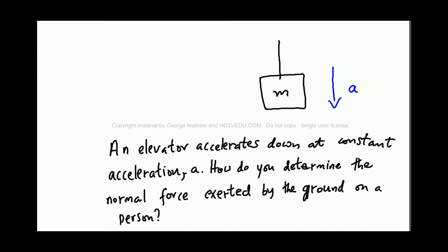An elevator accelerates down at constant acceleration a. How do you determine the normal force exerted by the ground on the person? Whenever we see a non-zero mass, isolate the mass.